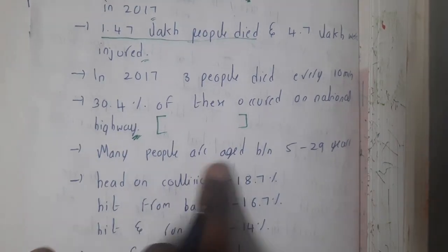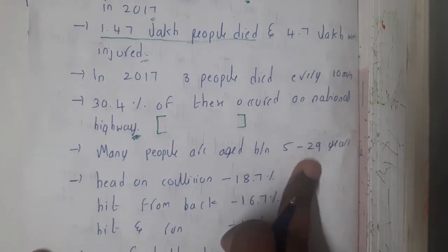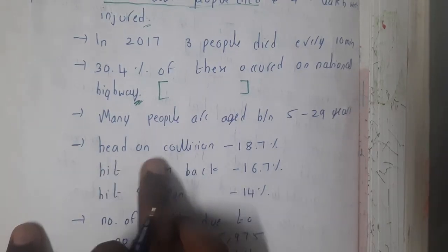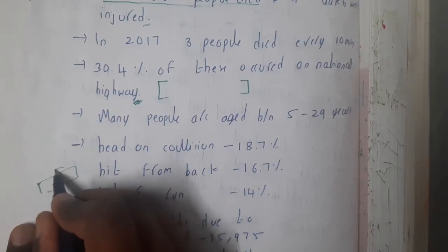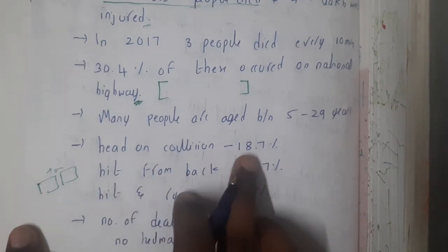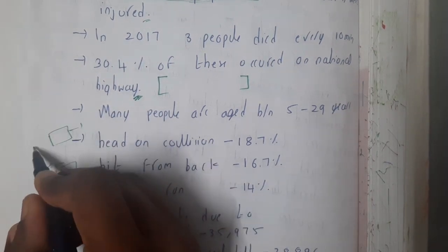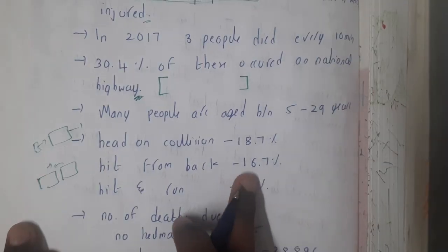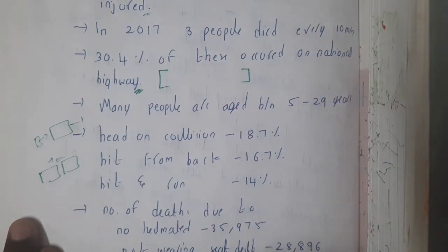Around 30.4 percent of accidents occurred on national highways. Many drivers involved in accidents are aged between 15 to 29 years. Types of collisions include head-on collisions — face-to-face hits — at 18.7 percent; hit on back at 16.7 percent; and hit and run at 14 percent.